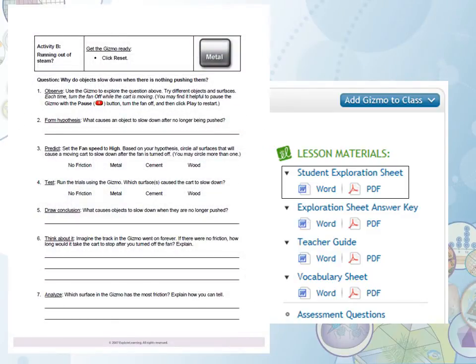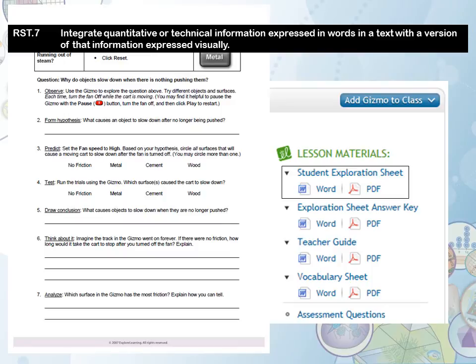This performance task supports RST7. The non-linguistic representation of information and data the gizmo provides can be paired with other informational text. Depending upon the teacher's request, students may be asked to integrate the information expressed visually by the gizmo with the technical information provided in the student exploration sheet or additional resource provided by the teacher.